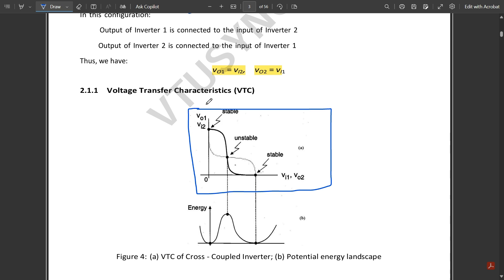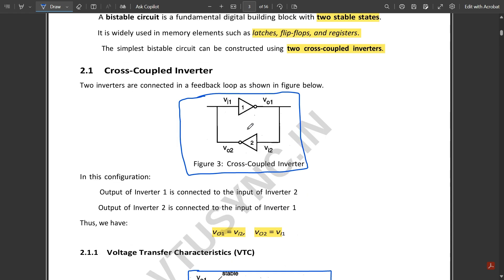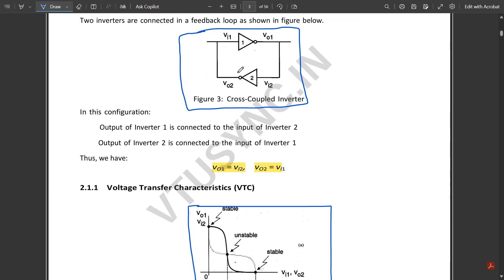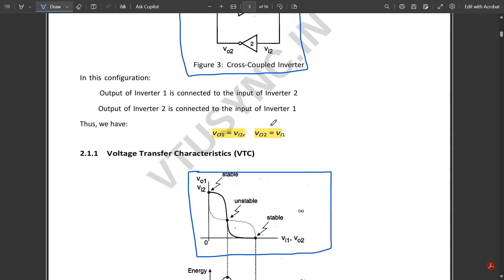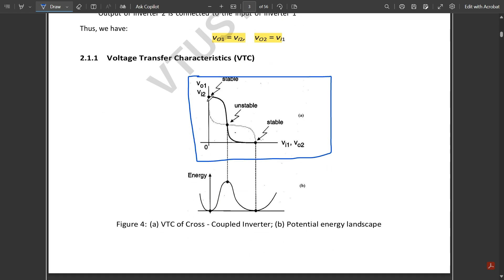This is VO1, VI2 and this is VI1, VO2. We have one more cross-coupled inverter which is given back from the output to the input. That's why we have one more curve here where we have two stable points and the intersecting point is unstable.